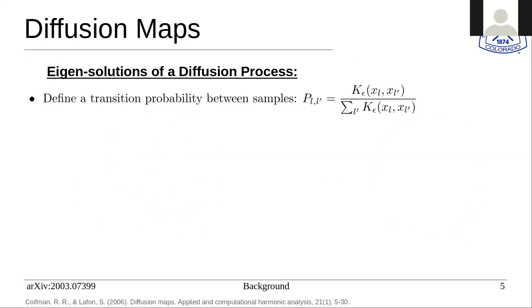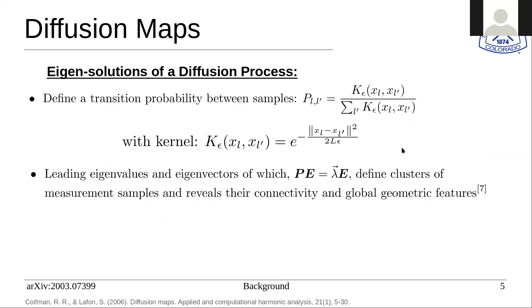To go into more detail on the diffusion process, you first define a transition probability that depends on a particular kernel. This kernel depends on the Euclidean distance squared, and it is a Gaussian kernel. Here epsilon is a Gaussian envelope size, and L is your system size. The leading eigenvalues and eigenvectors of this transition probability define the clusters of your measurement sample sets in your state space. It reveals their connectivity and geometric features, essentially the underlying Riemannian manifold of the data set.